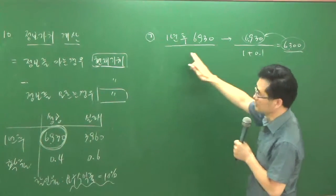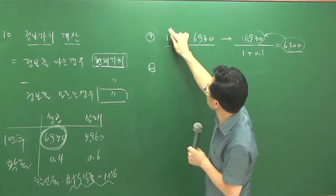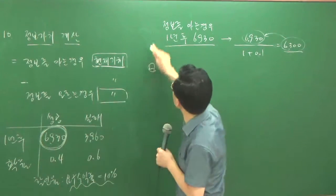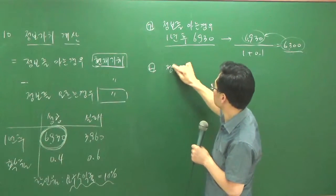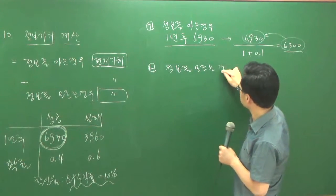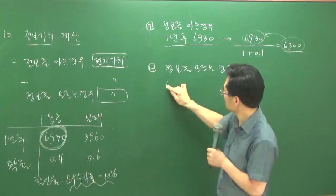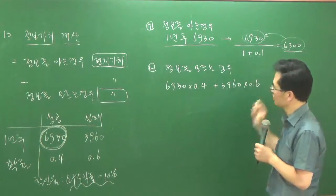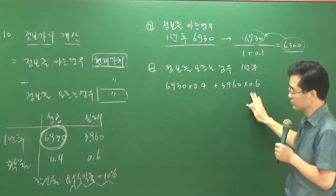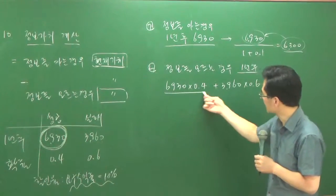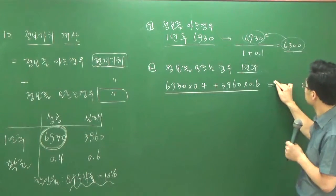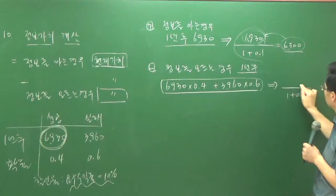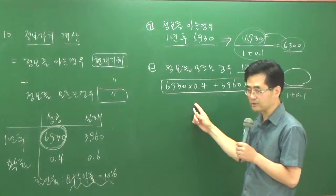어쨌든 정보를 아는 경우에 현재값이죠. 그럼 정보를 모르는 경우는요? 정보를 모르는 경우에는 이럴 수도 있고 저럴 수도 있다 다 계산해야 되죠. 정보를 모르는 경우에는 가중평균을 하는 거예요. 이럴 수도 있고 이럴 수도 있으니까 어떻게 해야 돼요? 6,930 곱하기 0.4 더하기 3,960 곱하기 0.6 이게 바로 1년 후 값이에요. 이게 정보를 모르는 경우에 1년 후는 이렇단 말이에요. 이걸 또 현재가치로 1 플러스 0.1로 나눠야 돼요.